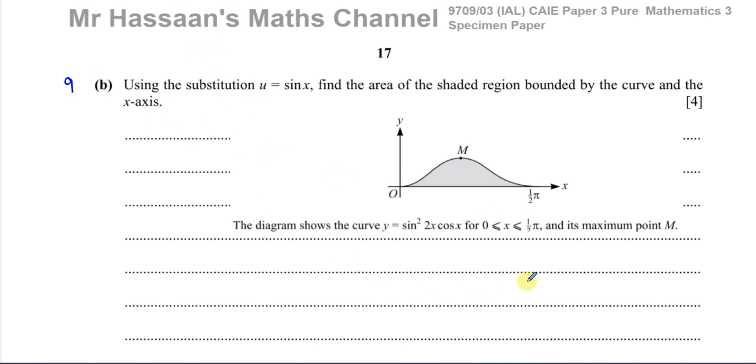When we have an integration to do using a substitution, there's different ways people set it all up. I like to use this particular method which I'm going to show you. Our objective is to find the integral of the function that we're integrating, which we'll call Y, with respect to X between the limits of X1 and X2. Here our function Y is sine squared of 2X times the cosine of X.